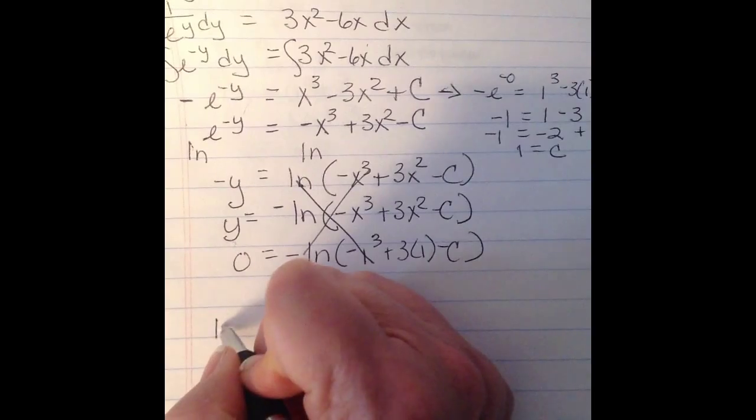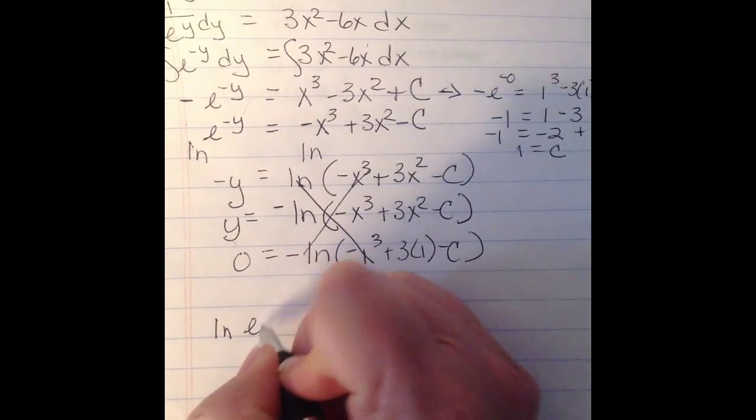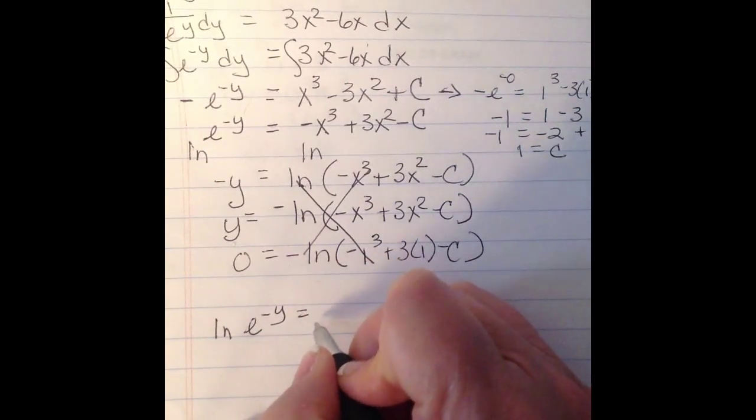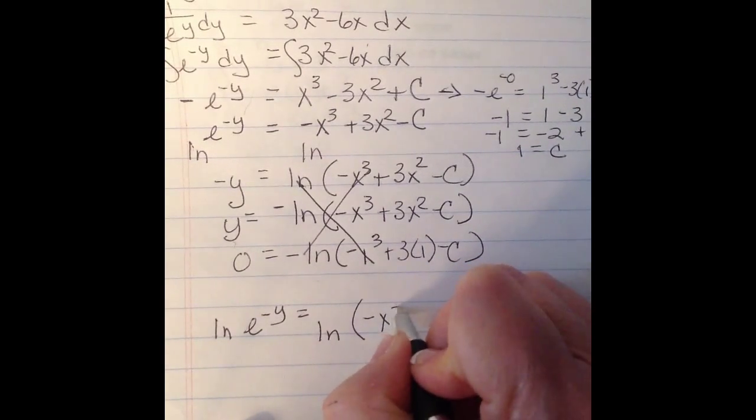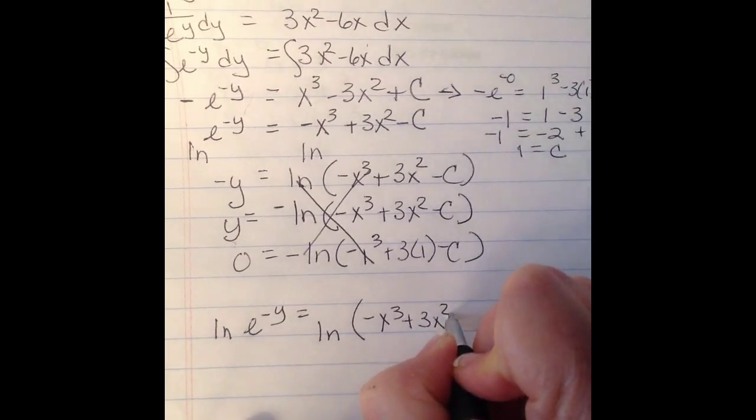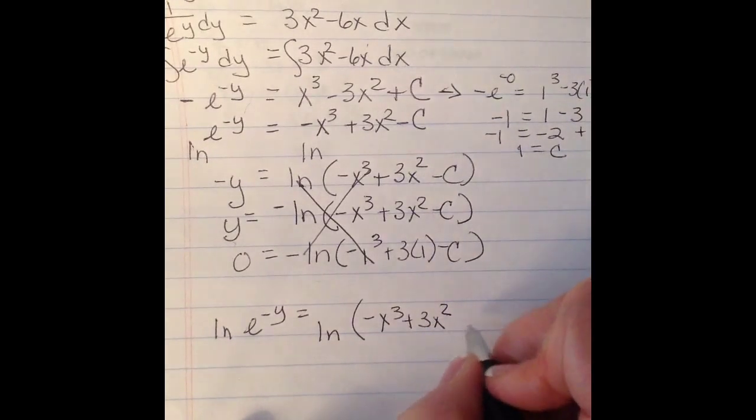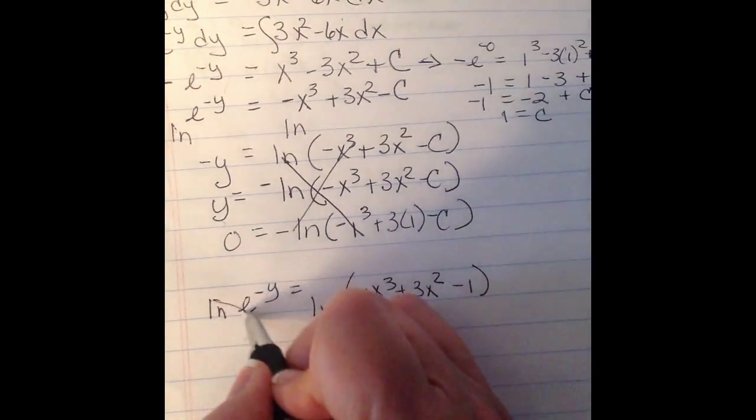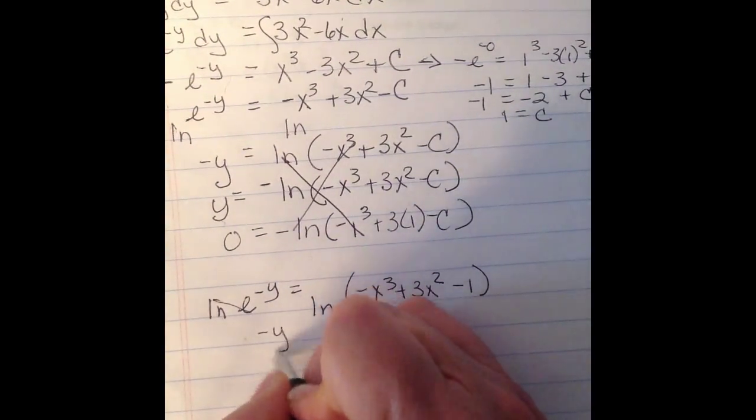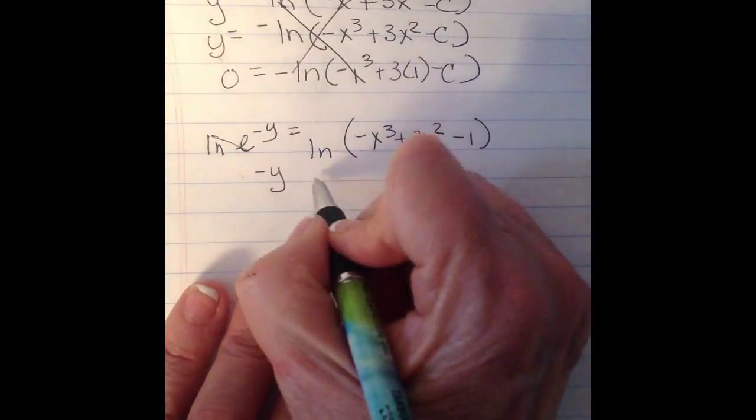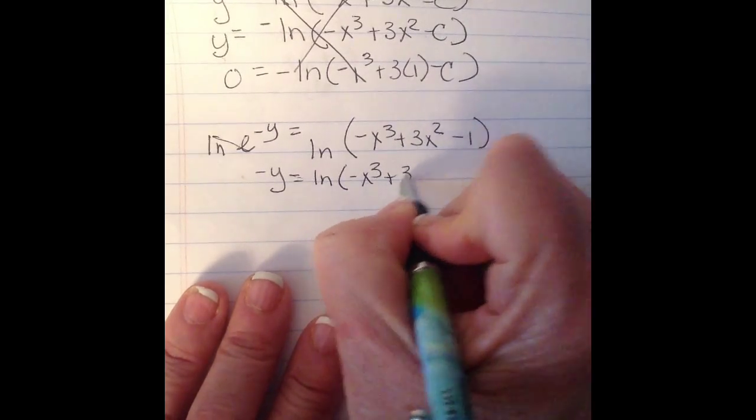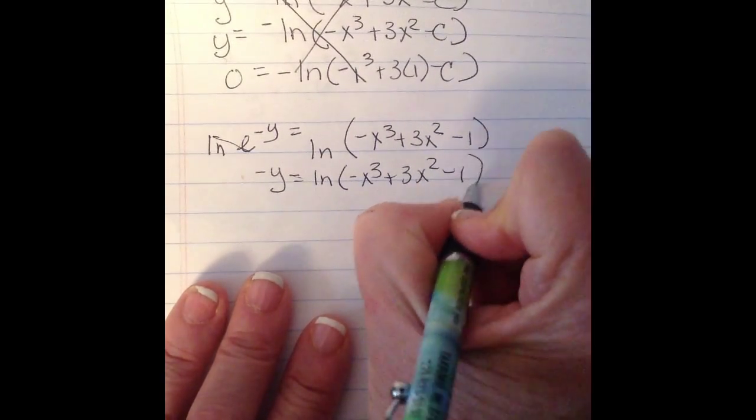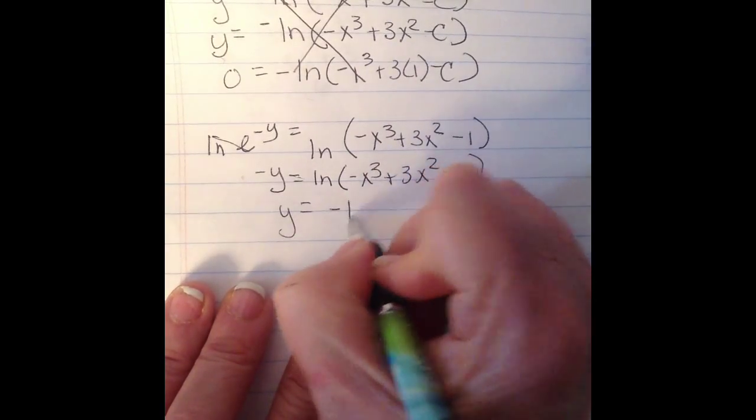So I'm still going to come up here and do my ln now. But I'm going to do it with ln(e^(-y)) = ln(-x² + 3x² - 1). And I'm going to put my c in. And of course this is going to cancel out. And our final answer would be this.